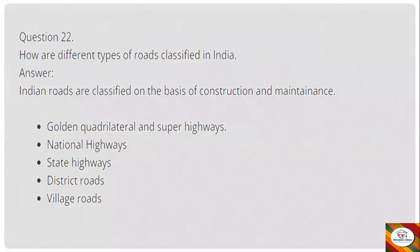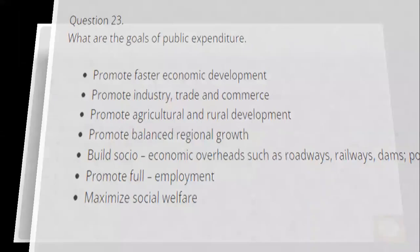Continued Q21: These byproducts are used in chemical industries such as dyes, plastics, synthetic fibers, and rubber. Question 22: How are different types of roads classified in India? Answer: Indian roads are classified on the basis of construction and maintenance into Golden Quadrilateral and Super Highways, National Highways, State Highways, district roads, and village roads.